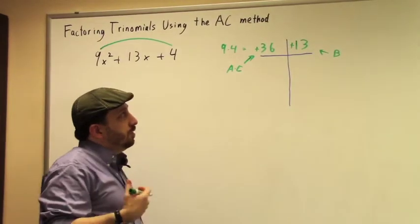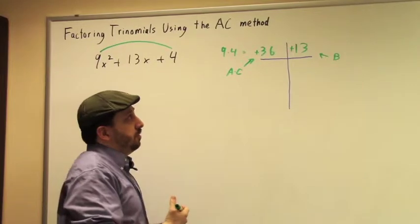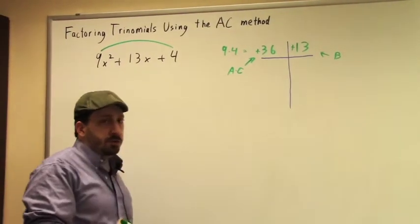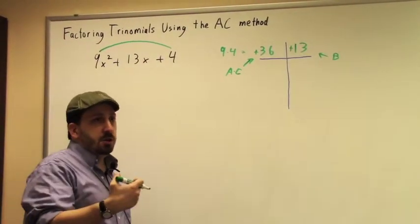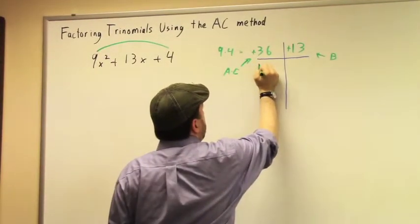Now, once I've done that and made my chart, what I'm going to do is I'm going to list the factor pairs of 36. Now since 36 is a relatively small number, I'm just going to start with 1 and work my way up. So my first factor pair is going to be 1 and 36.